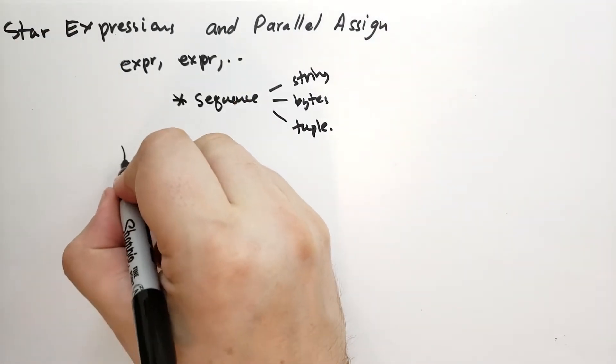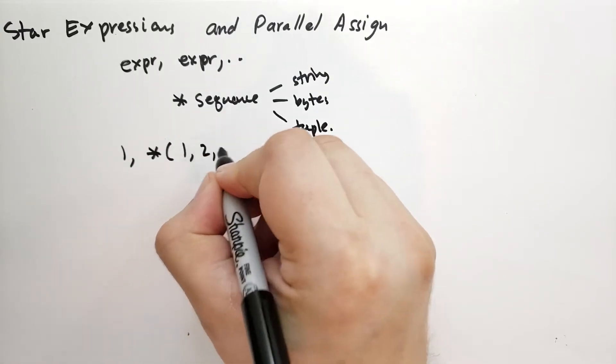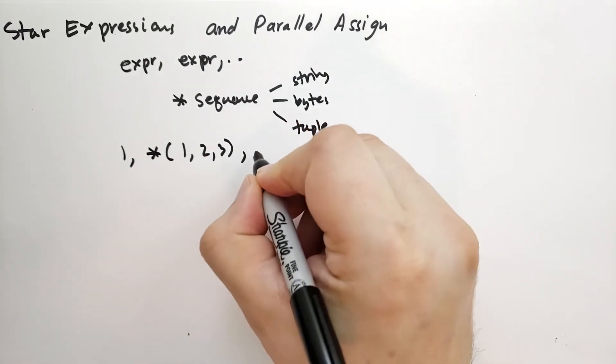When you include this star sequence, what it does is it unwraps the tuple and includes it in the list. Let me give you an example.